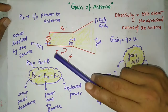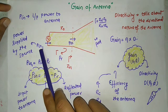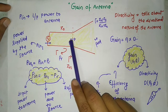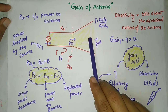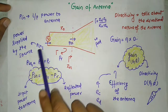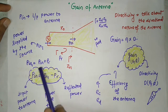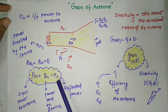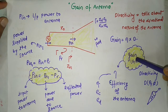If Z_in equals Z_naught, no power will reflect back. The source power breaks into two parts: reflected power and input power to the antenna. So P_in = P_in_one - P_r, where P_in is input power to antenna, P_in_one is power generated by source, and P_r is reflected power.